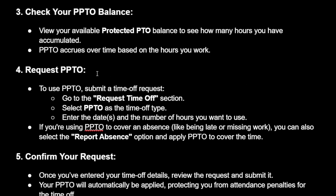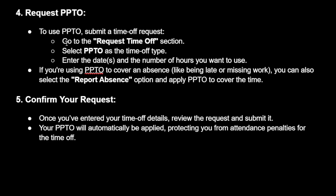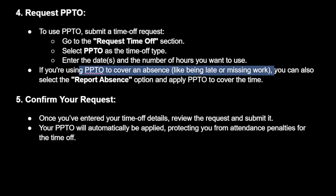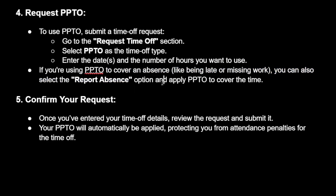To request PPTO, here's how we do it. Go to the Request Time Off section and select PPTO as the time off type. Enter the date and the number of hours you want to use. If you're using PPTO to cover an absence — like being late or missing work — you can also select Report Absence and apply PPTO to cover the time.